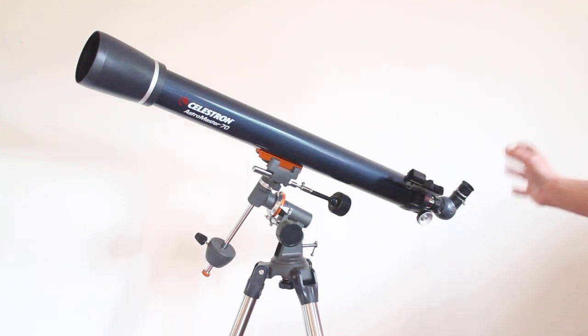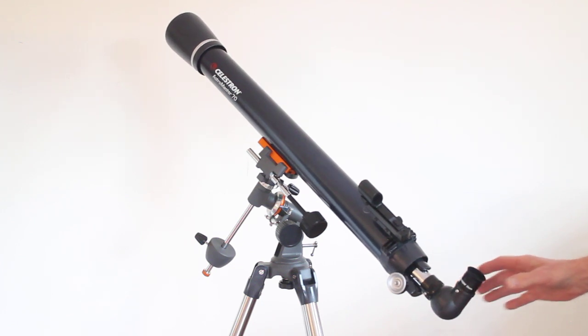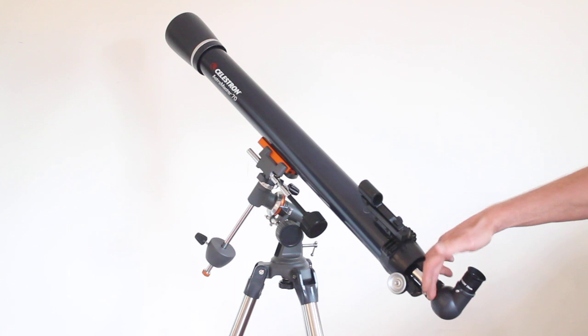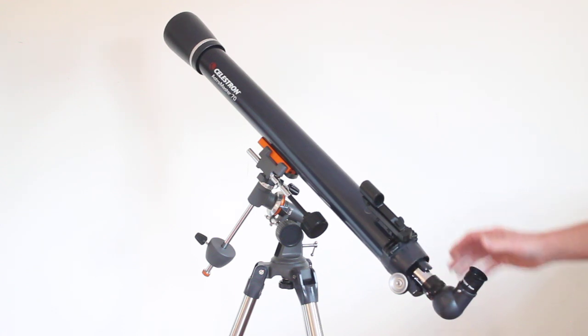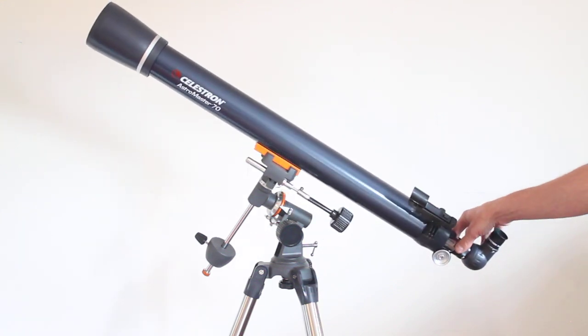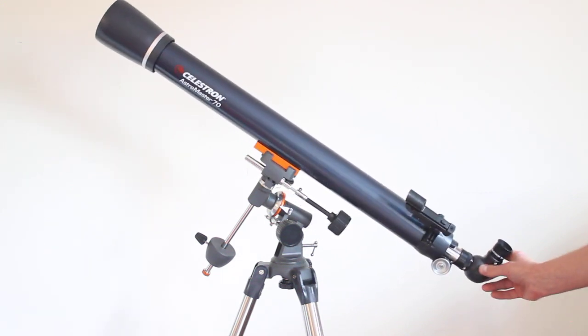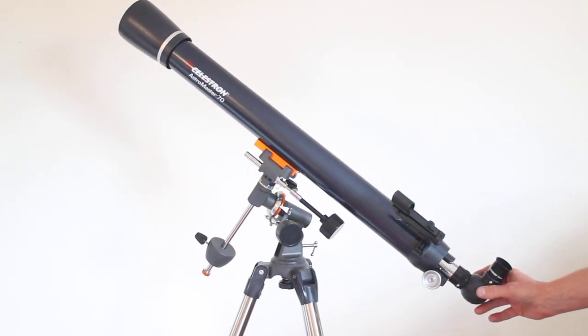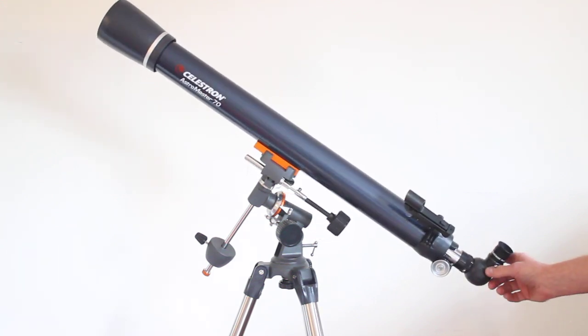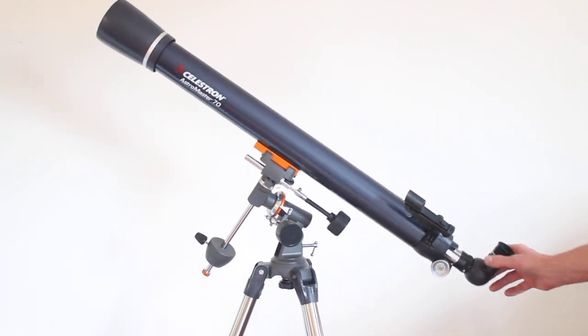For you prime focus photographers out there, you do get infinity focus with this. Just remove the diagonal and then put in a T adapter and a T ring for whichever DSLR camera you are using, and you can get some delightful views of the moon. We're using this telescope, so you can use it for photography as well.